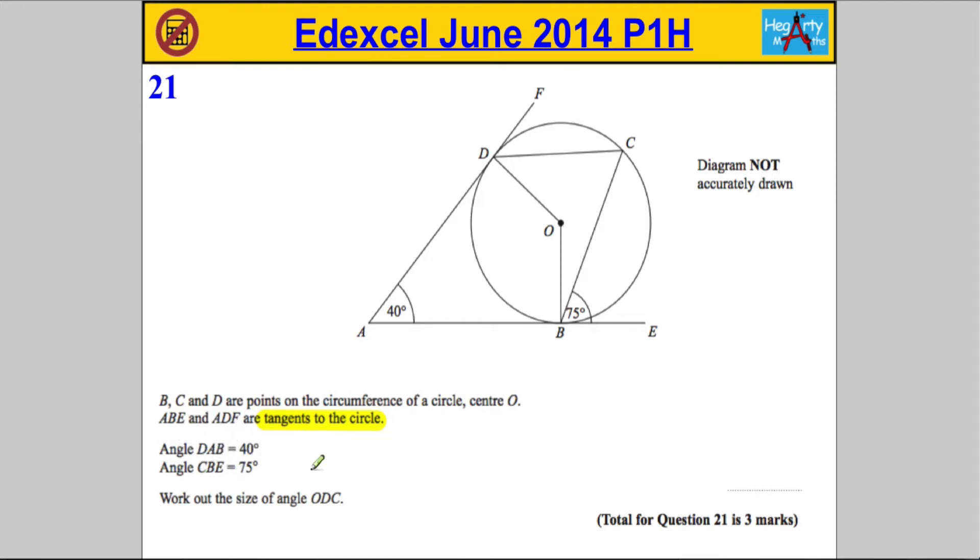If you see the word tangent to a circle and it's a circle theorems question, and you can see there's a tangent to the circle with the radius, first thing you should always do is draw in a right angle. You'll get yourself one mark just for marking it on the diagram, the right angle there.